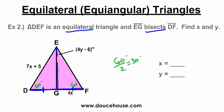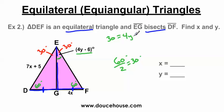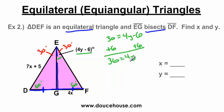So this angle is 30 degrees and this angle is also 30 degrees. Since we know this angle is 30 degrees, and it's also equal to 4Y minus 6, I'll set up: 30 equals 4Y minus 6. Adding 6 to both sides gives 36 equals 4Y. Dividing by 4, I get Y equals 9. To verify: 4 times 9 minus 6 equals 36 minus 6, which is 30. So we know we're correct.